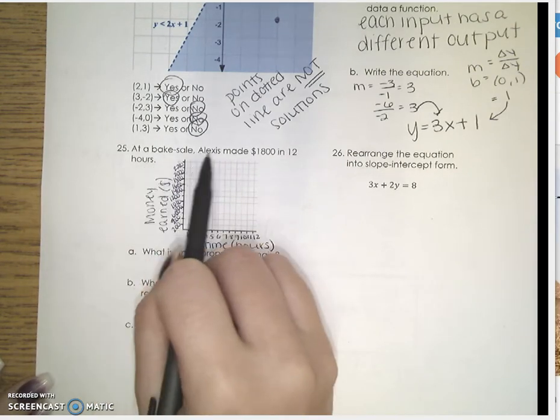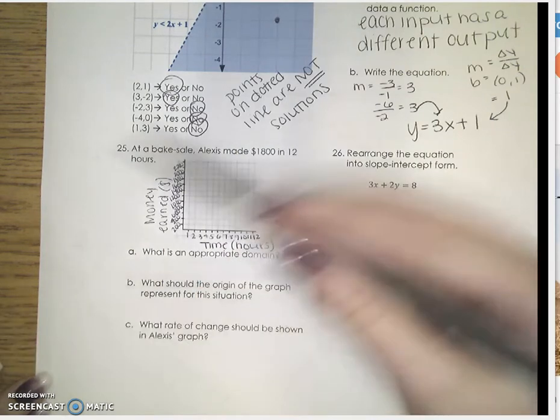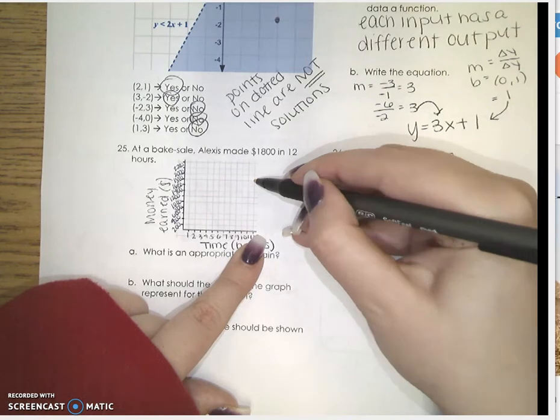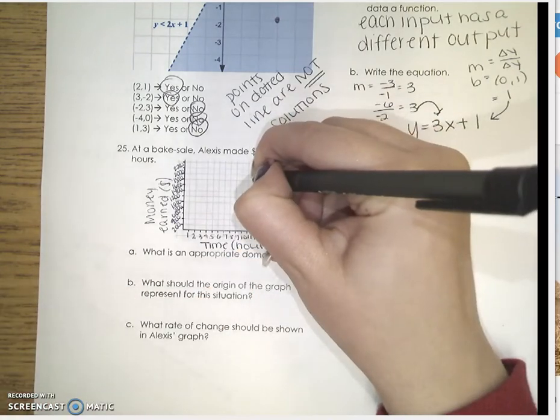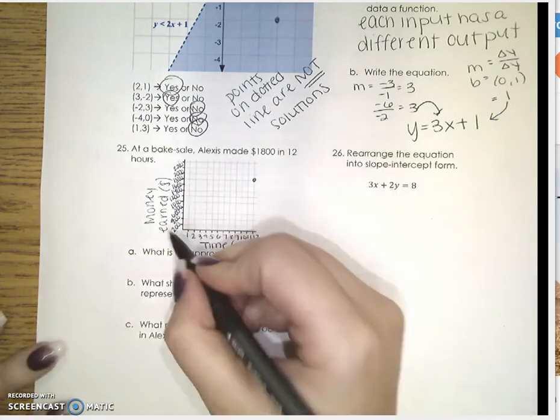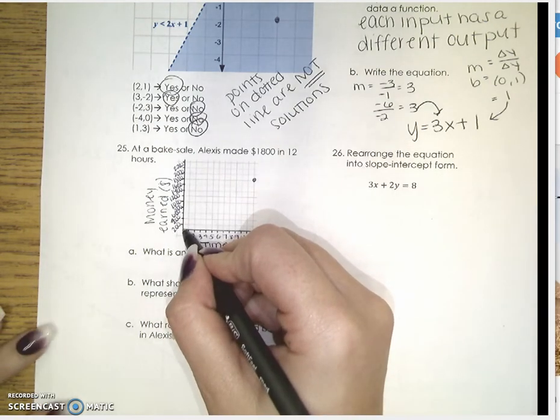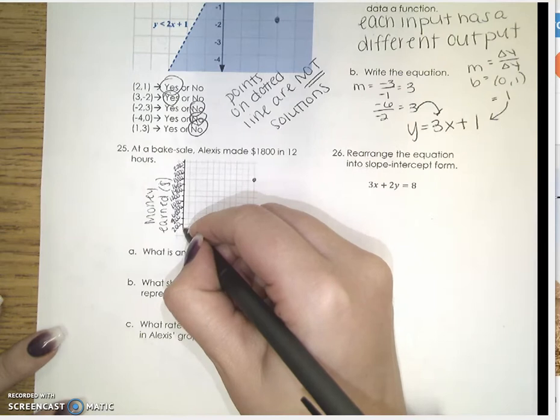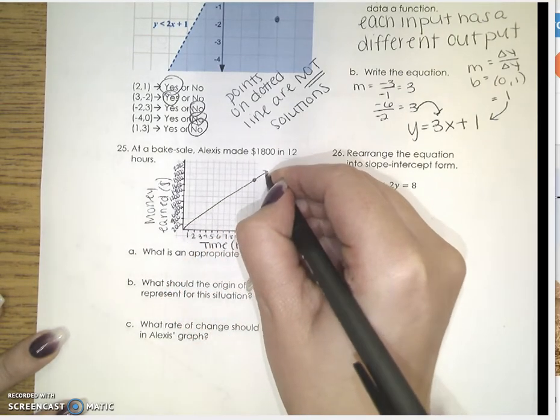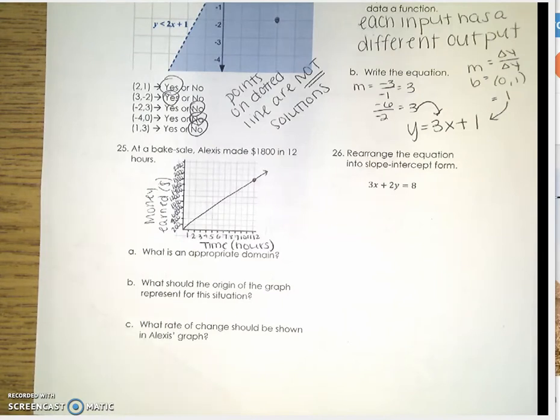So it said that Alexis made $1,800 in 12 hours. So in 12 hours, she made $1,800. So I'm going to plot that point right here. And at 0 hours, we can assume Alexis made $0. So I'm just going to connect this. And our graph looks something like that.